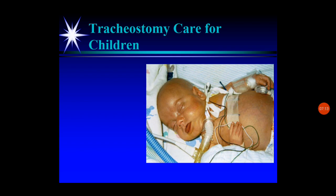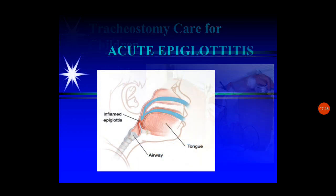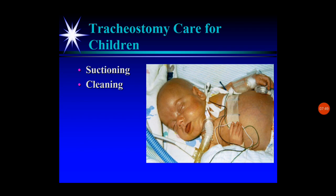Tracheostomy is typically performed because the obstruction is at the laryngeal level, making nasopharyngeal or endotracheal tube approaches ineffective. Since the obstruction is in the upper airway, oral or nasal approaches are of no use, so tracheostomy is done and care including suctioning and cleaning must be carried out.